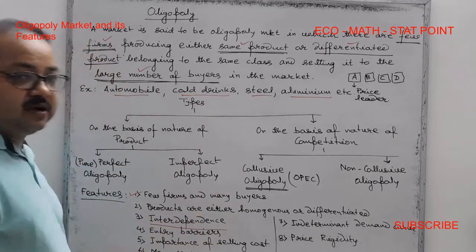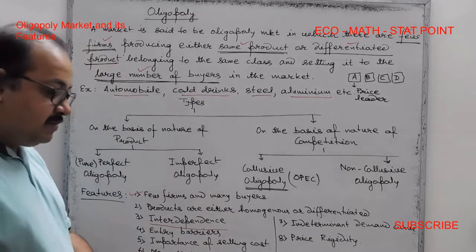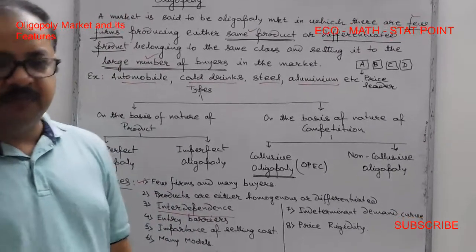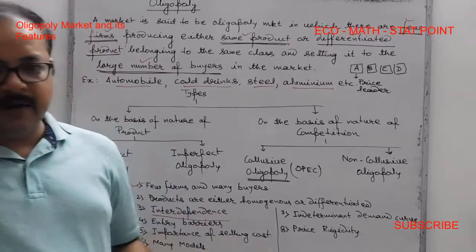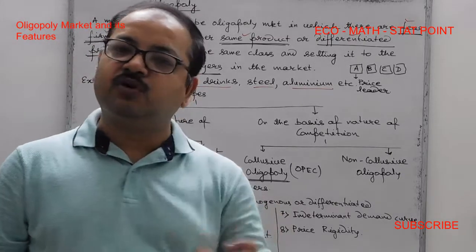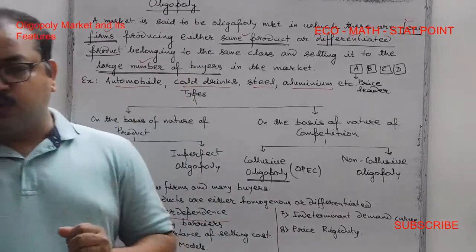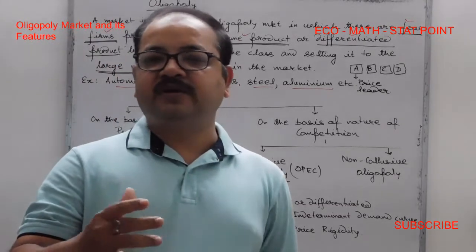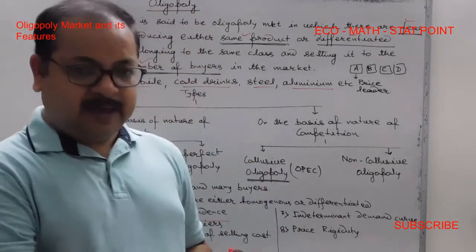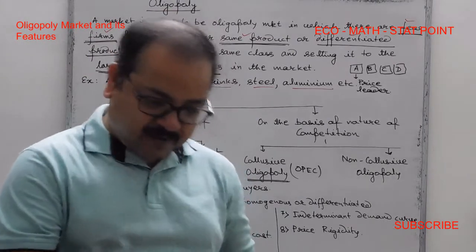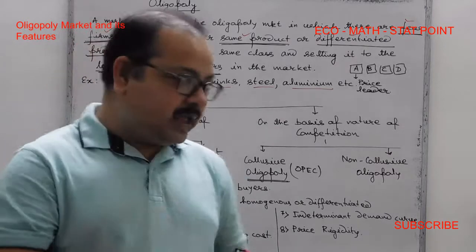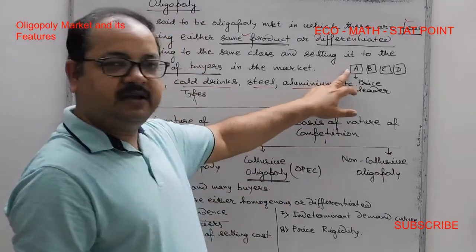The third feature is interdependence. Interdependence is very important in oligopoly. Since every firm has a significant market share, if one firm changes its price or quantity, it has a significant effect on the other firms in the market.